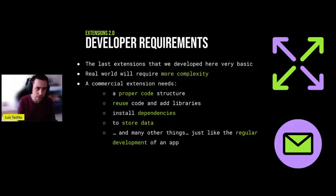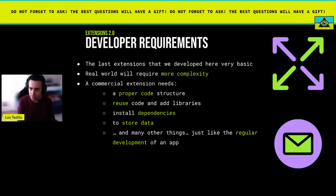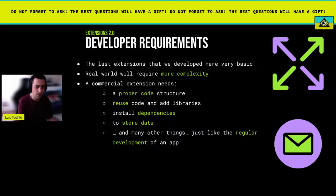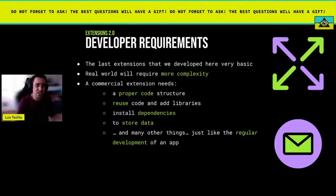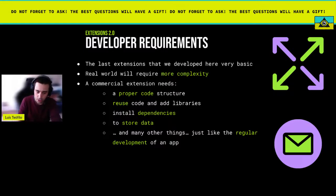We will also have some developer requirements for this Extension 2.0. The last extensions were developed with very basic code, but real-world applications will require a lot more complexity. A commercial extension needs a proper code structure - we need to be able to reuse code and libraries, install dependencies, store and persist data over time, and potentially communicate data with other users. It's just like regular development of an application - we can't rely just on quick patches to the DOM or basic JavaScript code.